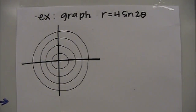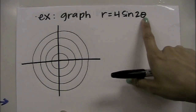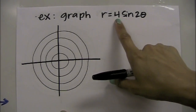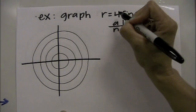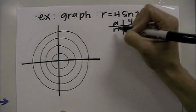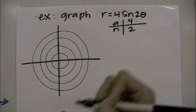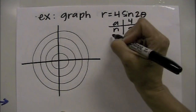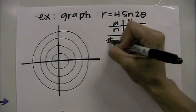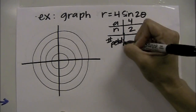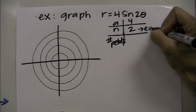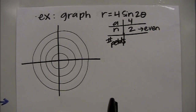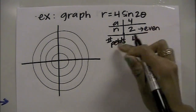Let's graph r equals 4 sine of 2θ. Because it's 2θ, we can identify our a value and our n value. A is the number in front, so a equals 4. N is the number in front of θ, so n equals 2. Because n is 2, which is even, we multiply by 2 to get 4 total petals in this graph.